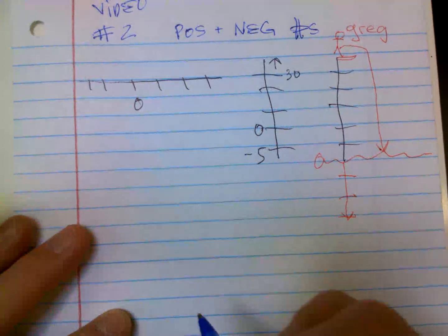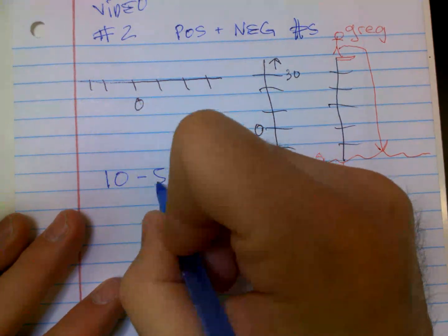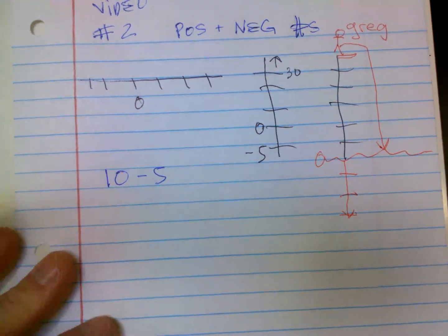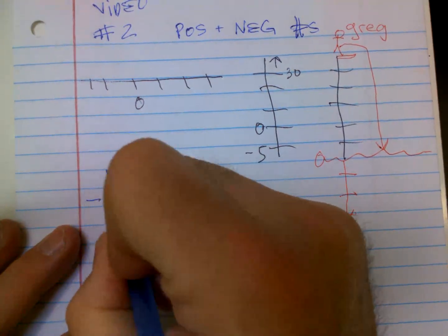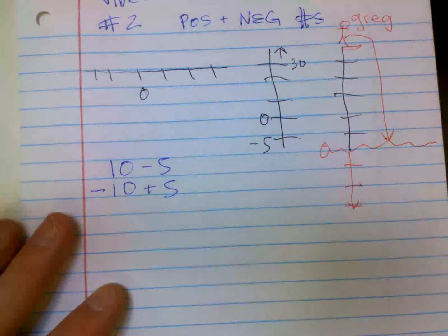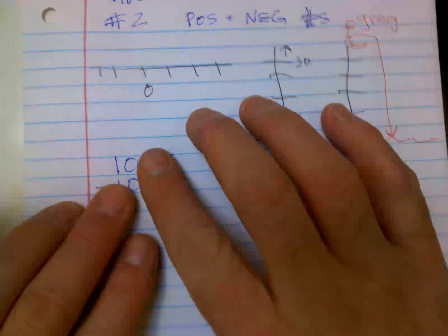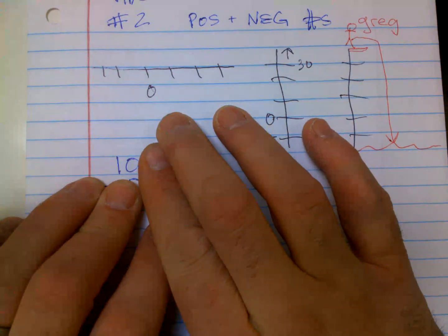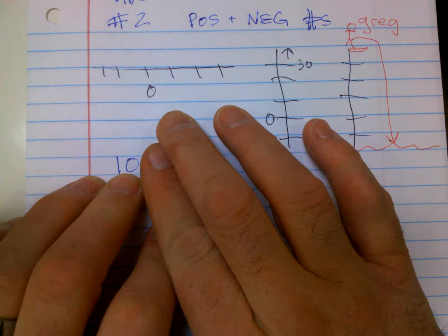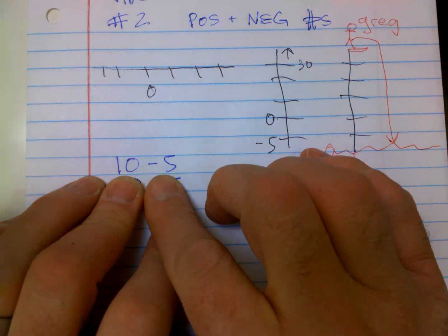And you end up in situations sometimes, it's always nice if we have 10 minus 5, right? Just look at everything by itself. You have, and I always say, think of money. You have $10. You're going to spend $5. So what are you going to have left? Okay, yeah, you're going to have $5 left. You have enough, right?